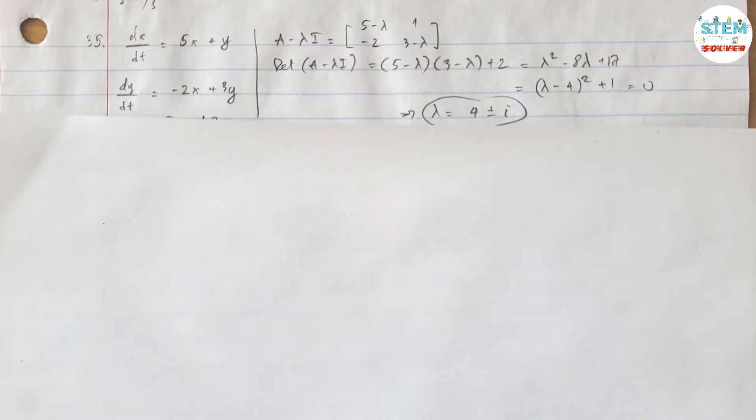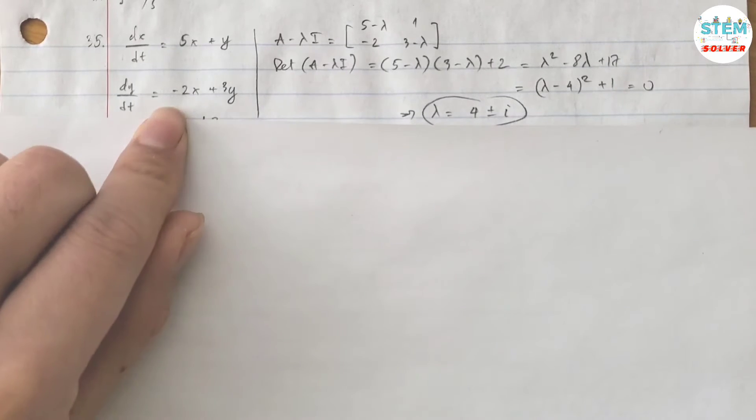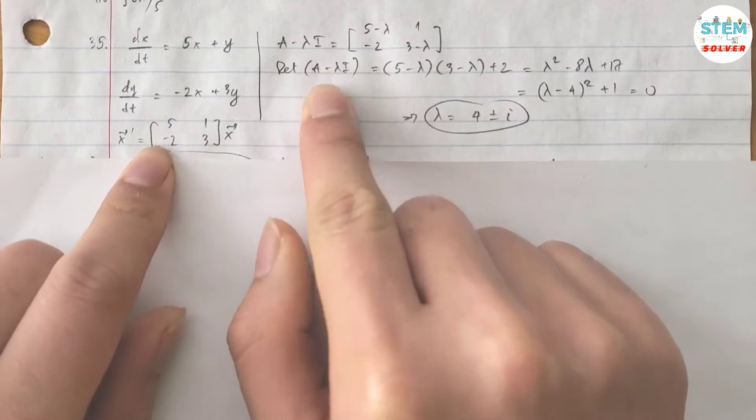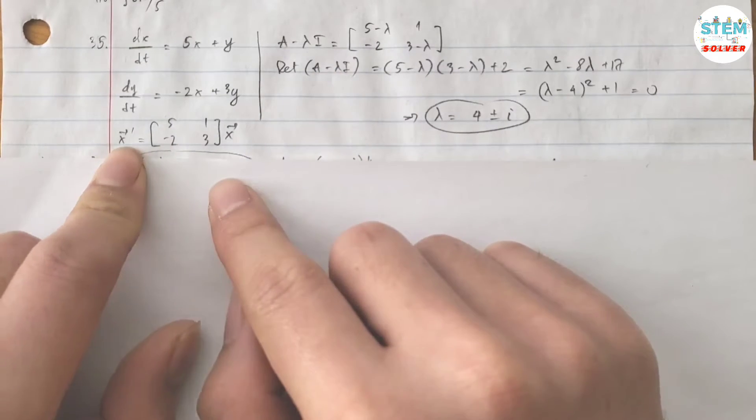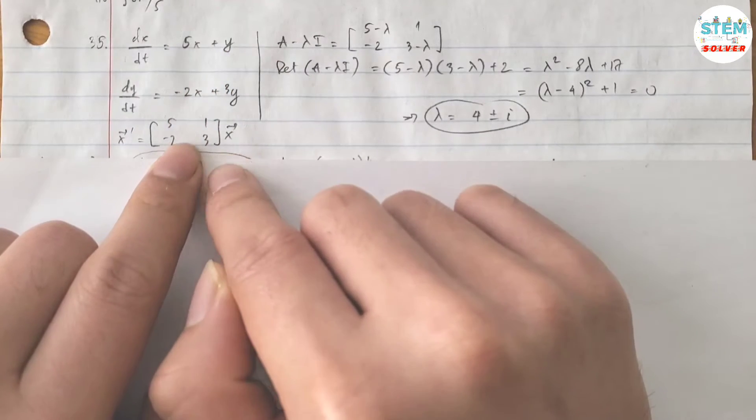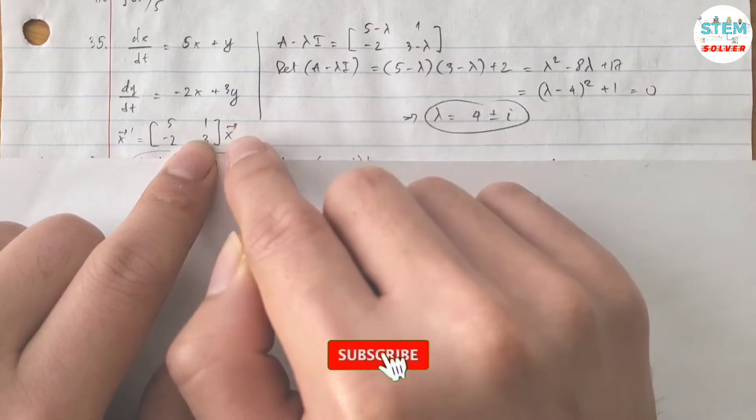Find the general solution of the given system. First you need to rewrite it. You need to put it into vector x prime, which basically you take the leading coefficient of x and y, put into this matrix and multiply by vector x.